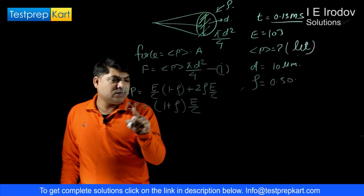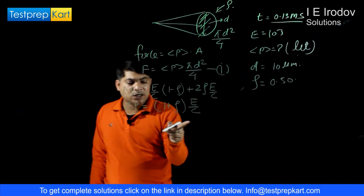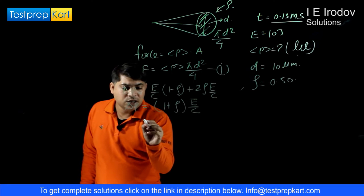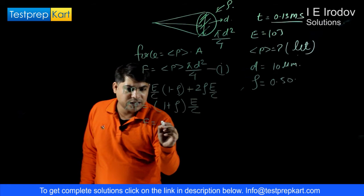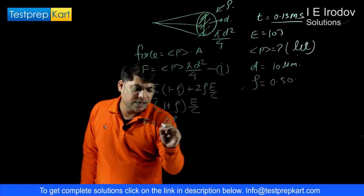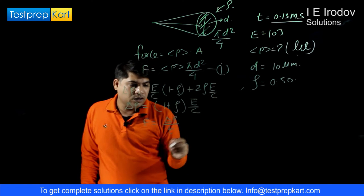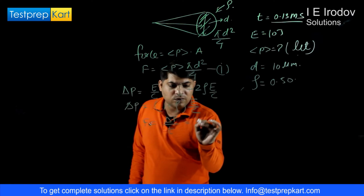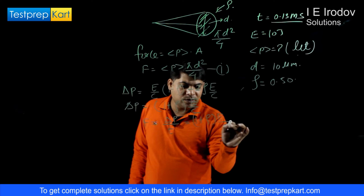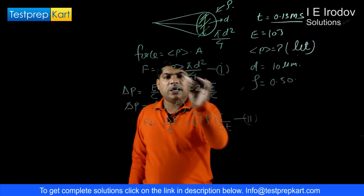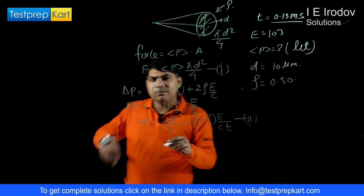Now according to Newton's second law of motion, change in momentum equals applied force. So applied force by this laser beam equals delta p over T and this duration T is given. So we can say this force is 1 plus rho into E over C into T. So now we have two equations related to force we can equate them.